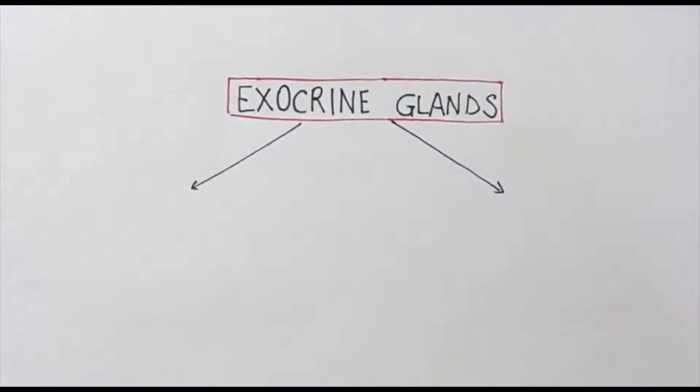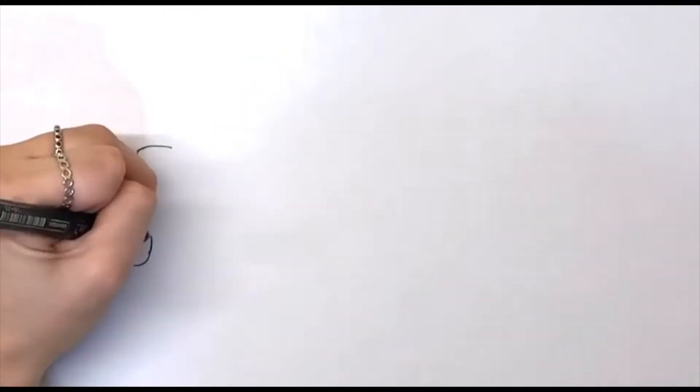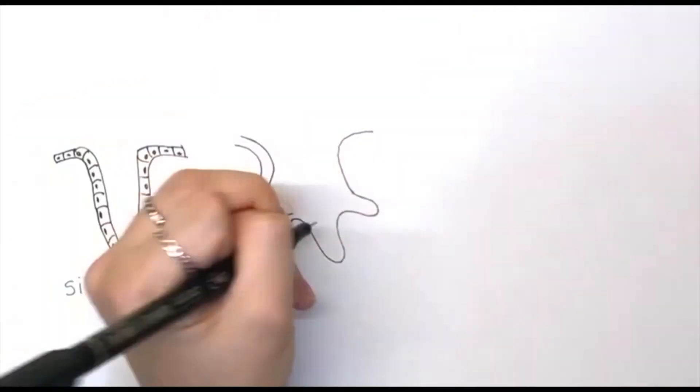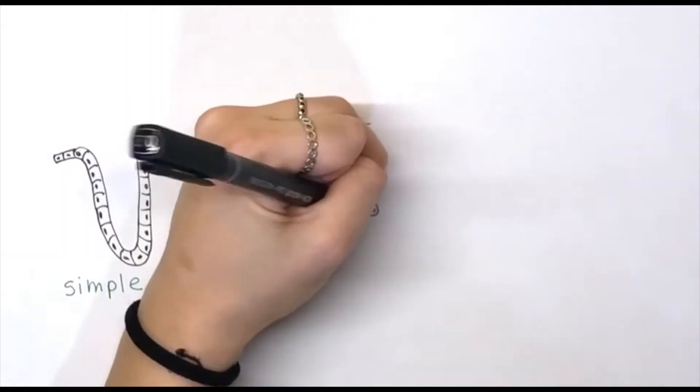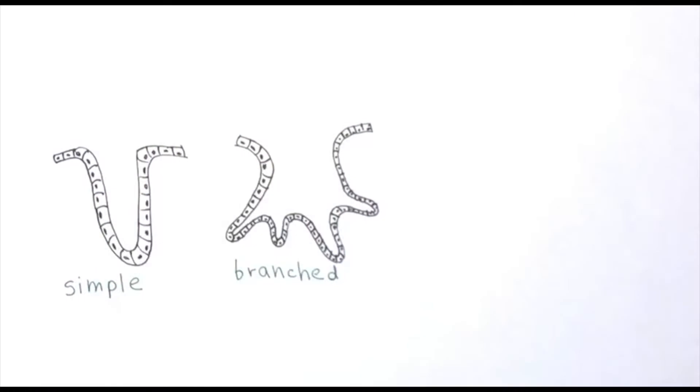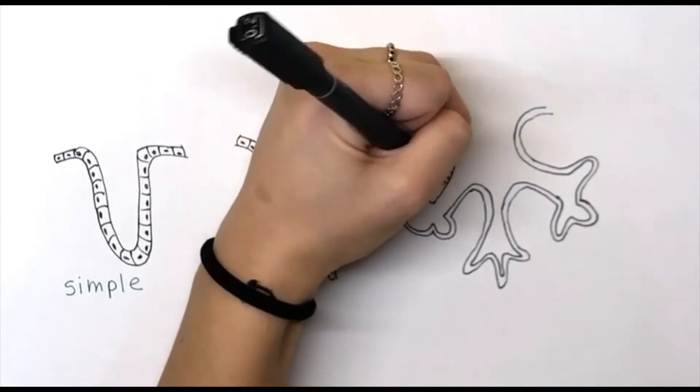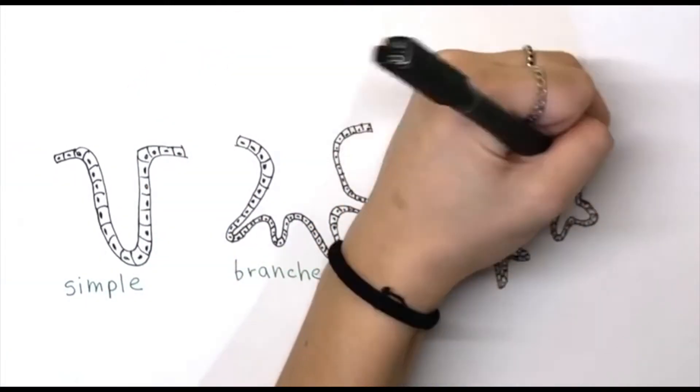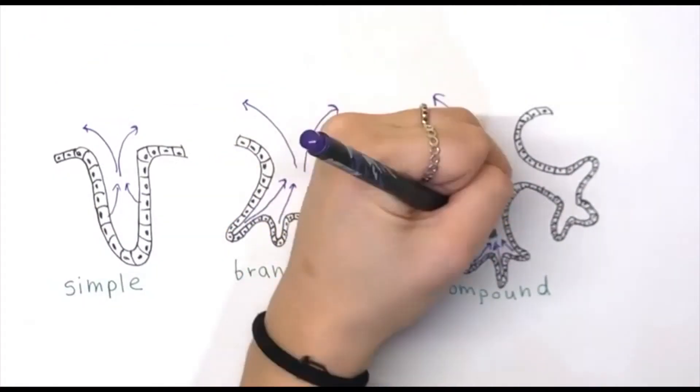Moreover, based on the number of excretory units and branches of the ducts we divide glands into simple glands formed by a single secretory unit with one duct, for example goblet cells; branched glands containing more secretory units that drain in one duct, some of the glands present in the stomach are structured in this way; and compound glands having both a multiple number of subunits and a branched structure of ducts, for example the salivary glands.